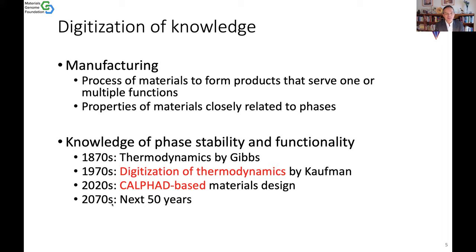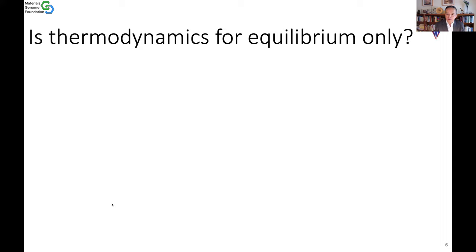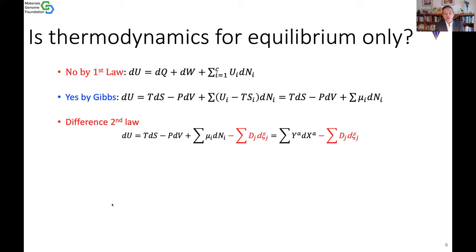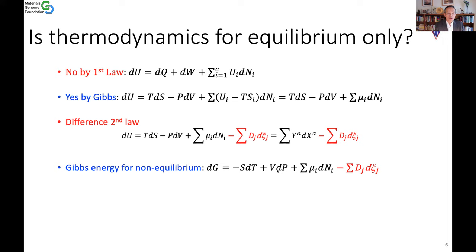There's one fundamental question: is thermodynamics for equilibrium only? Textbooks typically suggest yes, but actually it's not. If you look at the first law, it doesn't specify equilibrium. In the Gibbs equation of 1870, it does, because it doesn't have the entropy production term. But if you take the second law rigorously, you get another term — the driving force for internal processes. You can then extend the Gibbs energy to include this term. The key is how to get that free energy term, which was introduced by Larry Kaufman about 50 years ago. KSI here represents the internal state variables, allowing you to describe non-equilibrium states.